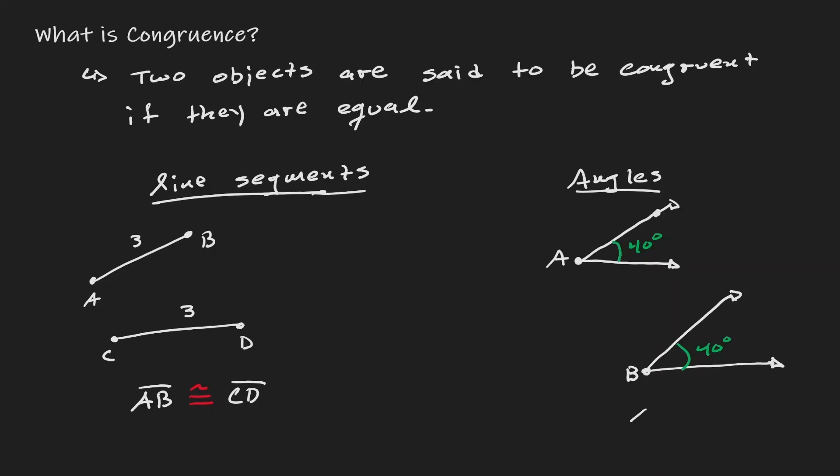If we call this angle A and we call this angle B, then what we can say is that angle A is congruent to angle B. So if we see the word congruent, we imply equal in length or equal with each other.